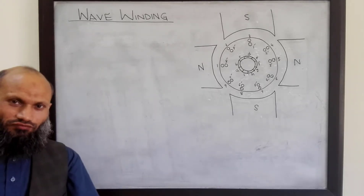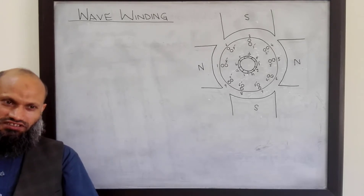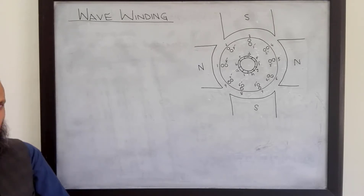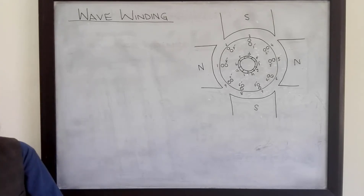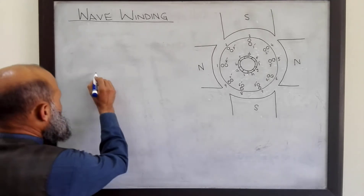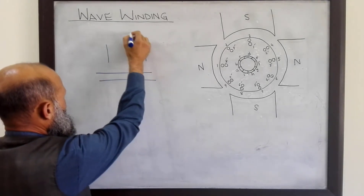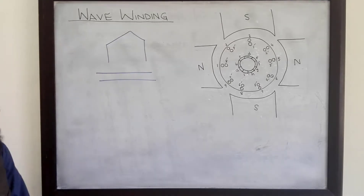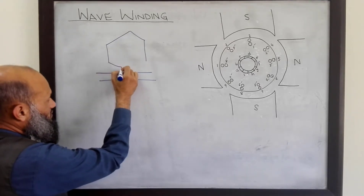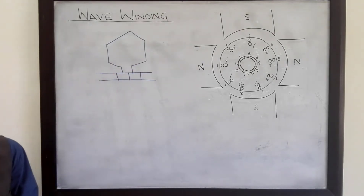In today's lecture we shall talk about wave winding. There are different ways to connect the coils in the rotor to commutator segments. Two most important arrangements are lap winding and wave winding. In the last lecture we talked about lap winding. In case of lap winding, two sides of the same coil were connected to adjacent commutator segments. That arrangement was called lap winding.